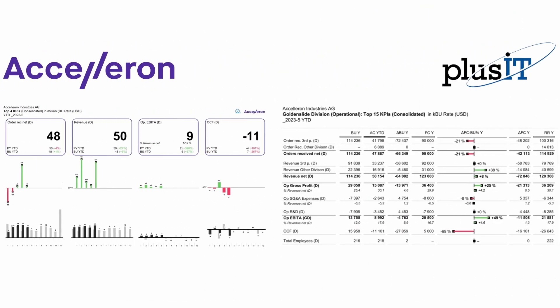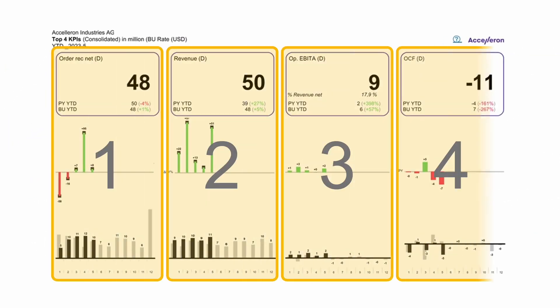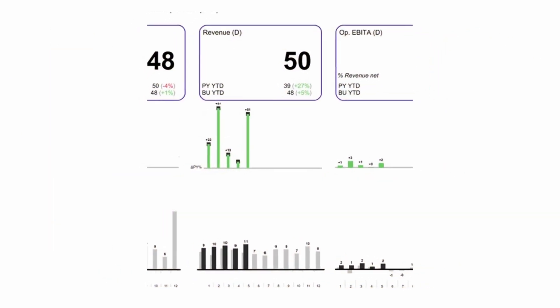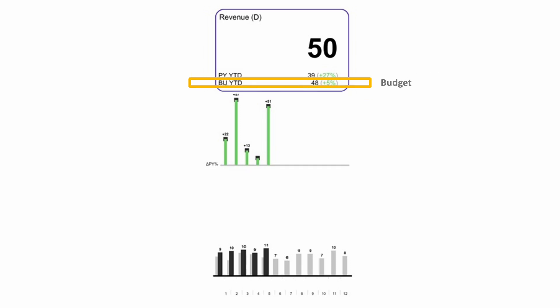The last example is developed with PLUS IT. The company is Acceleron Industries, a global leader in high-power turbocharging and digital solutions. The Acceleron examples are profitability-related. On this first page, we have an overview of the top 4 profitability KPIs, compared to previous years and budget figures.